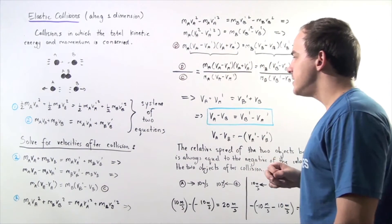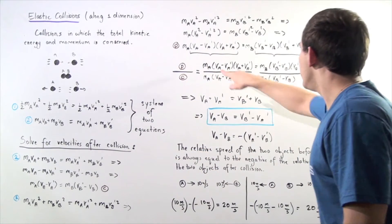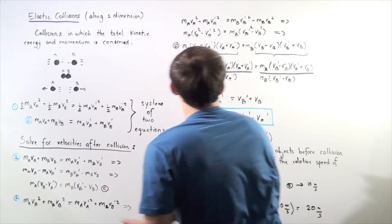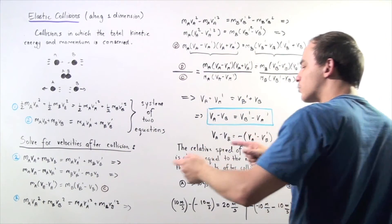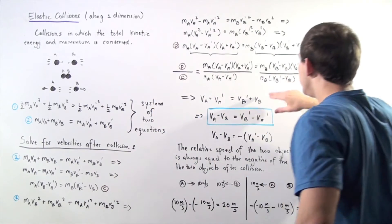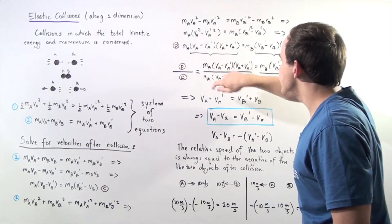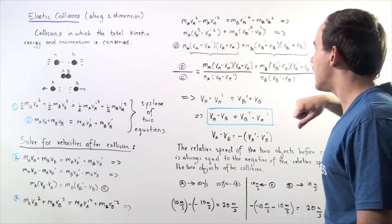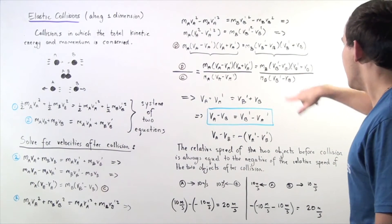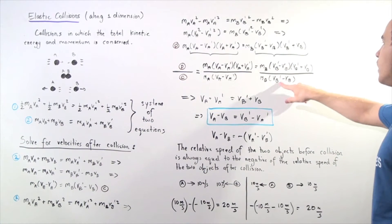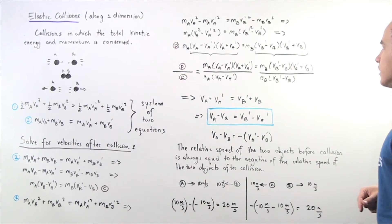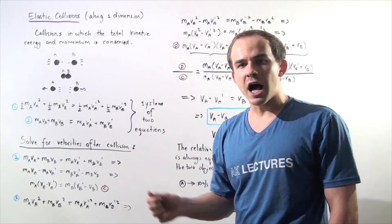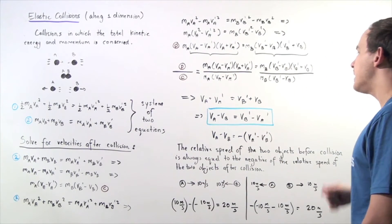If we take equation D and divide it by equation C, we get the following result. The MA terms cancel, the MB terms cancel, the (VA minus VA prime) factors cancel, and the (VB prime minus VB) factors cancel. We're left with: VA plus VA prime equals VB prime plus VB.